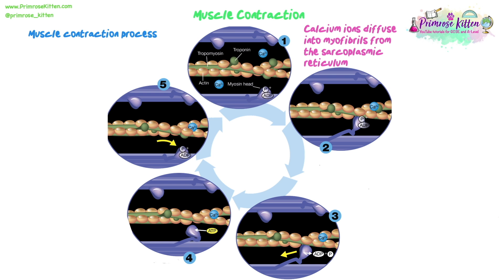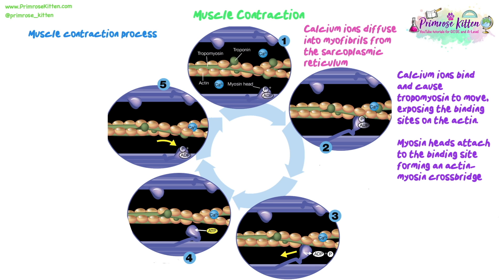The calcium ions diffuse into the myofibril from the sarcoplasmic reticulum, triggered by the depolarisation of the sarcolemma and T-tubules. The calcium ions then bind and cause the tropomyosin to move, exposing the binding sites on the actin — causing a shape change that exposes those binding sites. This allows the myosin heads on the myosin filaments to attach to those binding sites, forming what we call an actin-myosin cross bridge.